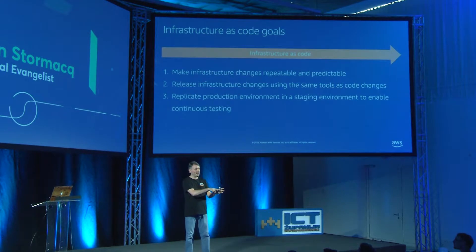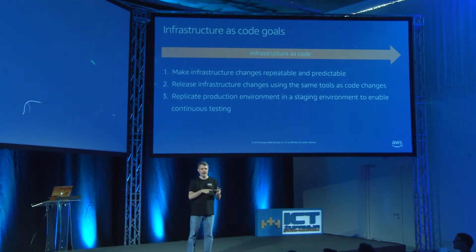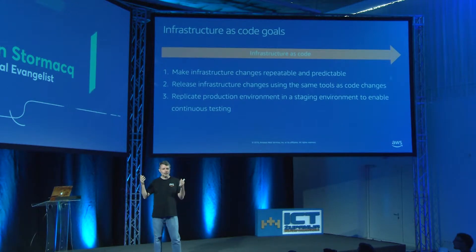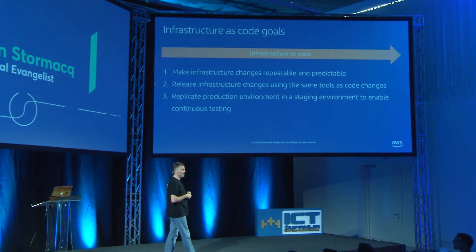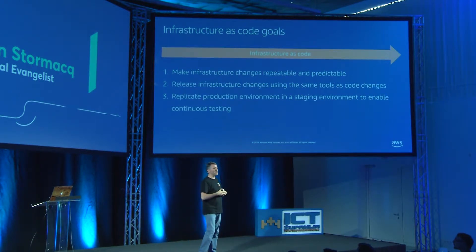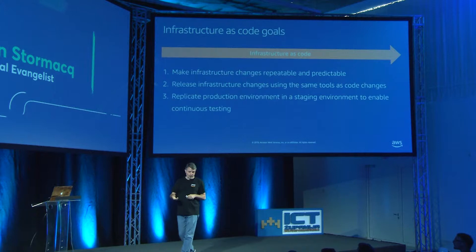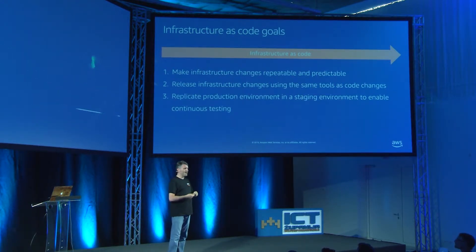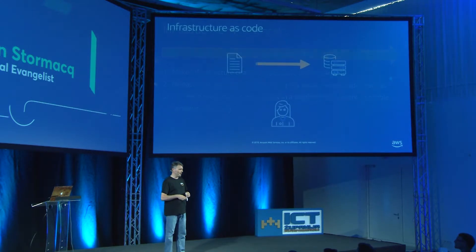When you deploy code on that server, it behaves a bit differently from the others. Maybe it's just one server out of 10, so maybe one in 10 customer requests sometimes crashes for whatever reason. You don't want to be there — you want all your infrastructure to be the same. In the cloud, you just write the script, execute it, and it creates infrastructure for you automatically.